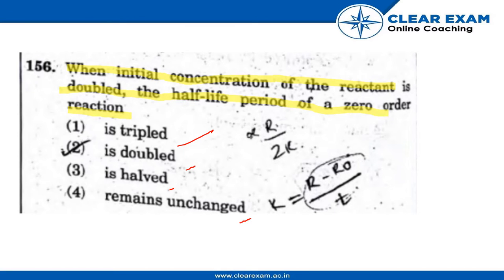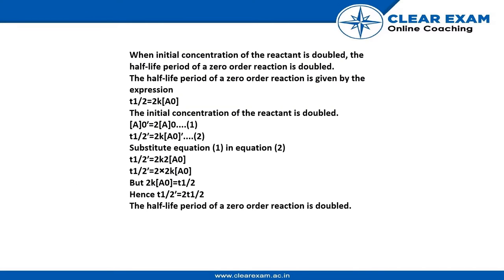Now look at the solution. When initial concentration of the reactant is doubled, the half-life period of zero-order reaction is doubled because the half-life period of a zero-order reaction is given by the expression T1/2 = A0/2k.